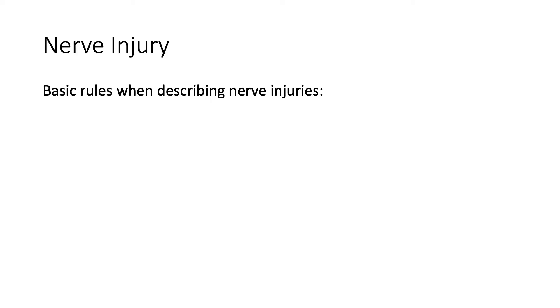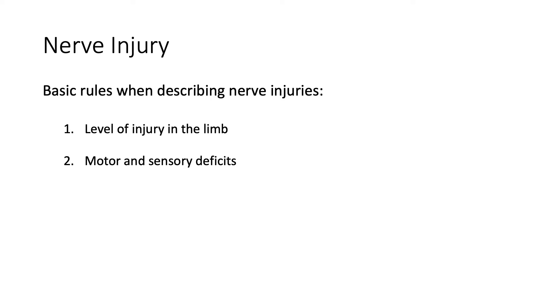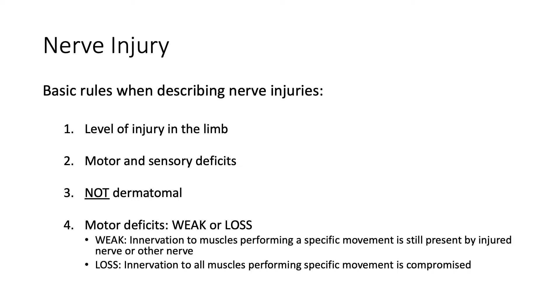Before discussing median nerve injuries, some basic rules are required. First, you need to know the level of injury, as different levels produce different deficits. Second, describe nerve injuries as motor and sensory deficits — these are not dermatomal in pattern. For motor deficits, differentiate between weakness and total loss of power. Weakness means innervation is still present via the injured or another nerve, whereas loss means innervation to all muscles performing a specific movement is compromised.